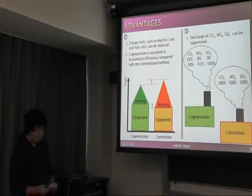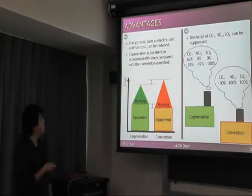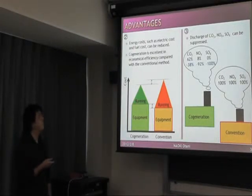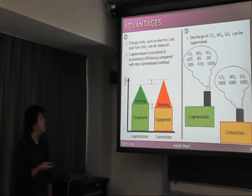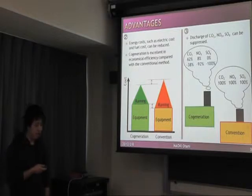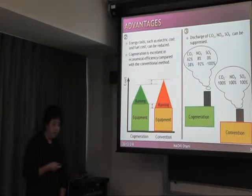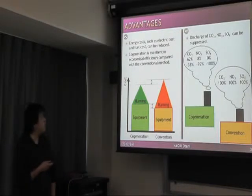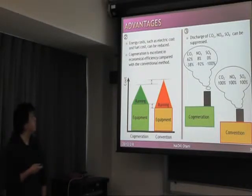The second advantage is about cost. Energy costs such as electrical cost and fuel cost can be reduced. Cogeneration is excellent in economical efficiency compared with the conventional method.